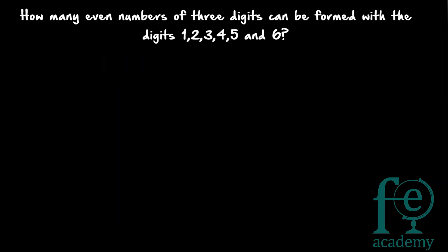Next question: how many even numbers of 3 digits can be formed with the digits 0, 1, 2, 3, 4, 5 and 6? Whenever 0 comes, you have to consider it as a separate case because 0 cannot come in the 100th place for a 3-digit number. For even numbers, we take two cases. First case: the units digit equals 0. When units digit is 0, this is automatically even.